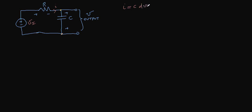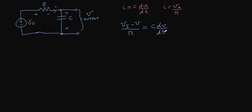For the capacitor, the current I equals C dV/dt. For the resistor, I equals V_R over R by Ohm's law. Solving the circuit: the current entering the node is VI minus V over R, which equals the current to the capacitor C dV/dt. Dividing both sides by C gives VI minus V over RC equals dV/dt.